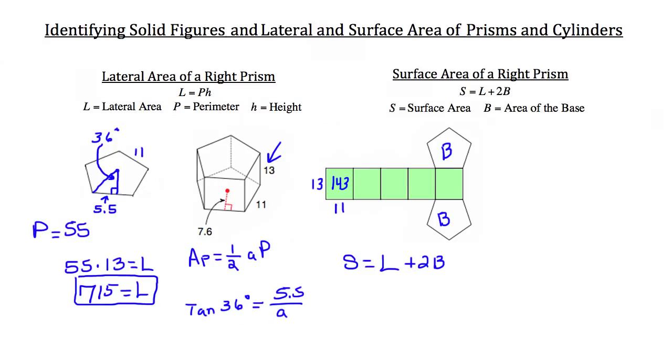So tangent of 36 has a value of 0.73. So 0.73 is equal to 5.5 divided by our apothem. And a nifty little mathematical trick is to just switch those two. It'll save you two steps in this problem. And we have our apothem is equal to 5.5 divided by 0.73. So our total apothem length is 7.5.